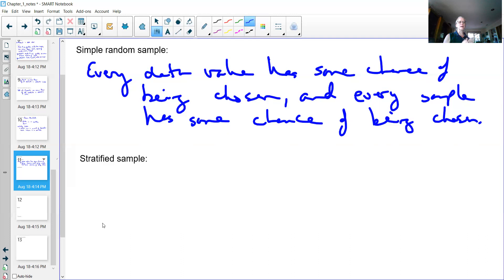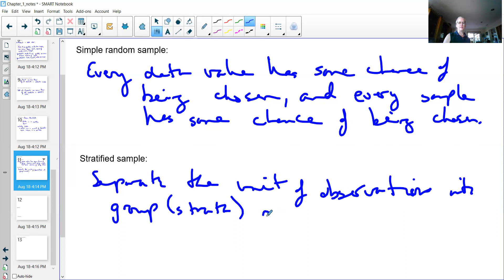What that means is you separate the unit of observations into groups, which we call strata, and then randomly pick inside each strata.